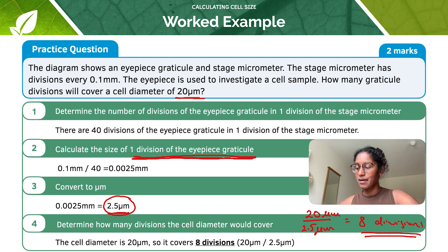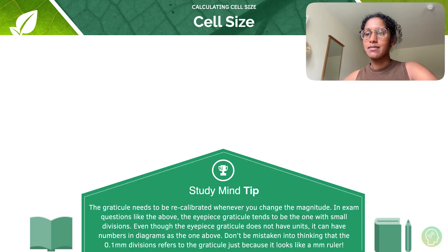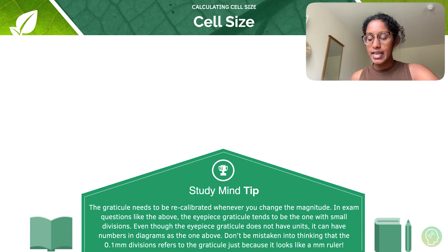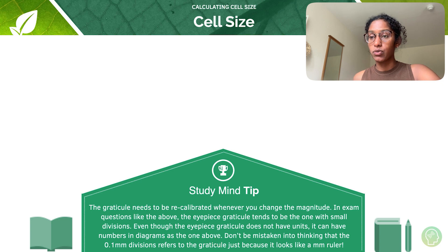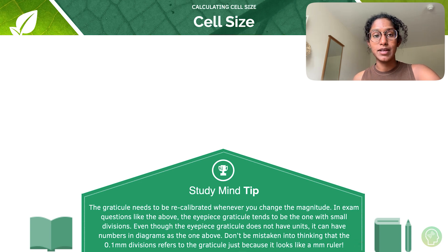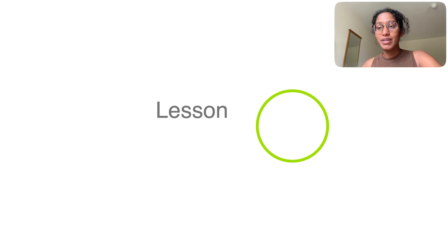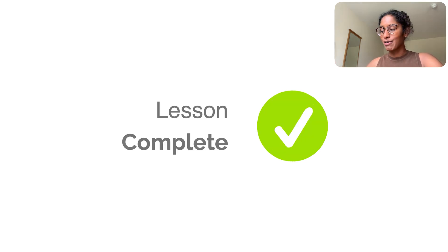I hope that makes a lot of sense. Just a tip: you need to recalibrate the graticule every time you change the magnification. In exam questions, the eyepiece graticule tends to be the one with small divisions. Even though it does not have units, it can have numbers in diagrams. So don't be mistaken into thinking that the 0.1 millimetre divisions refer to the graticule just because it looks like a millimetre ruler. That is our tutorial complete for today — well done for following through and I'll see you for the next one.